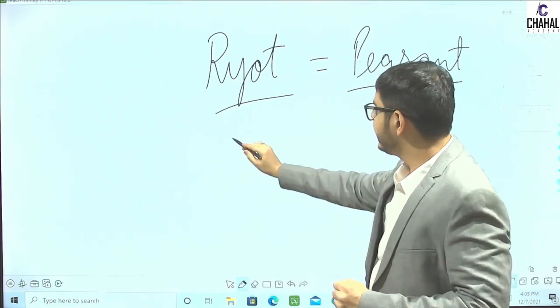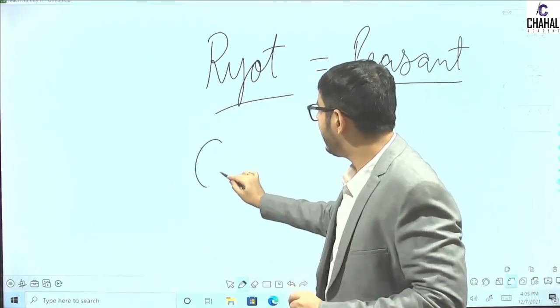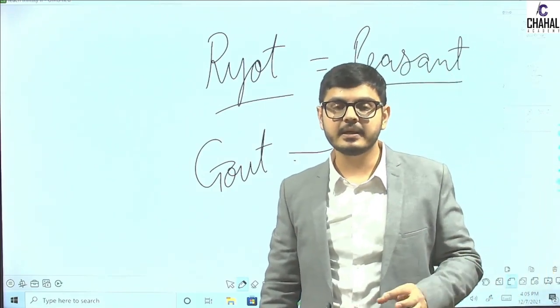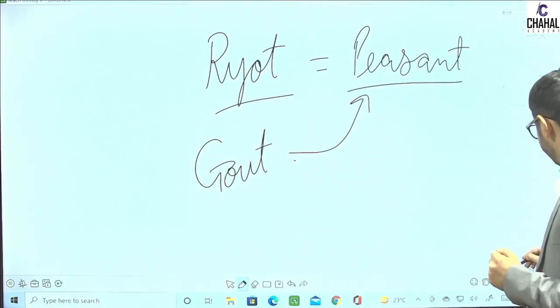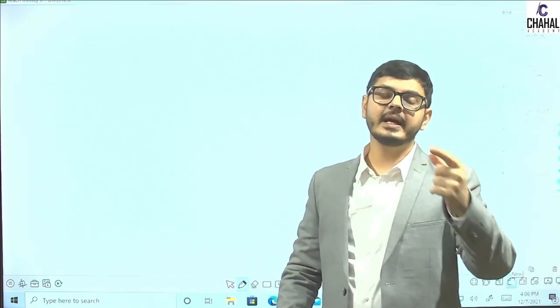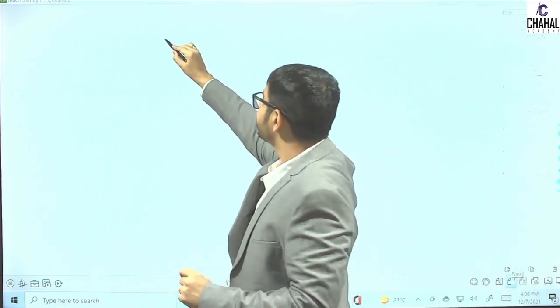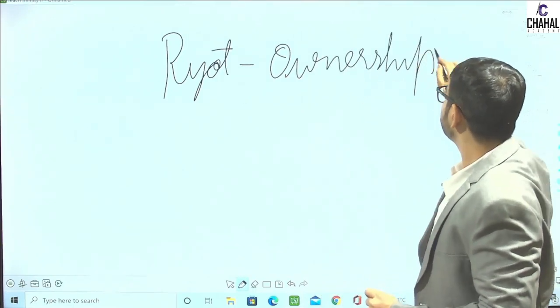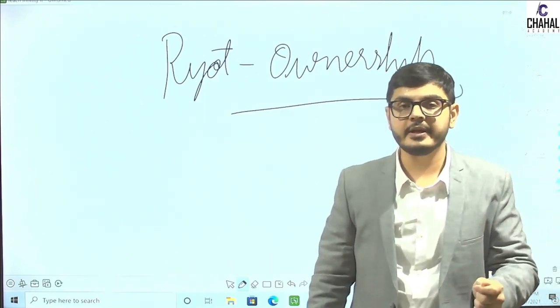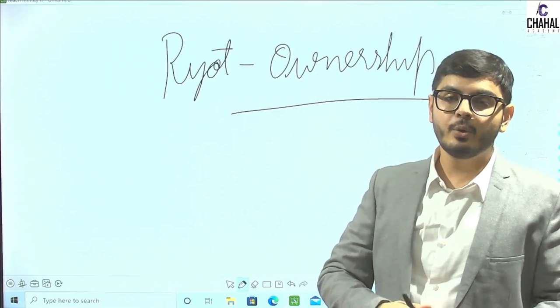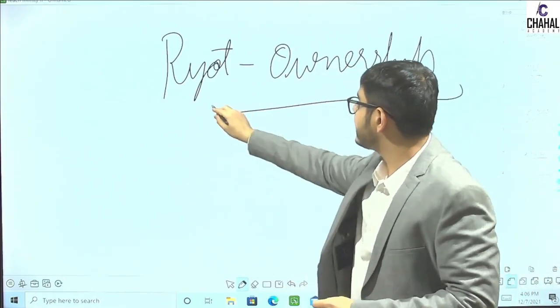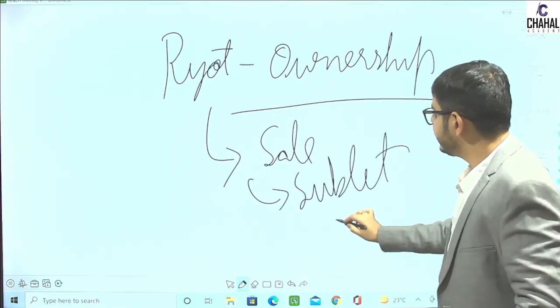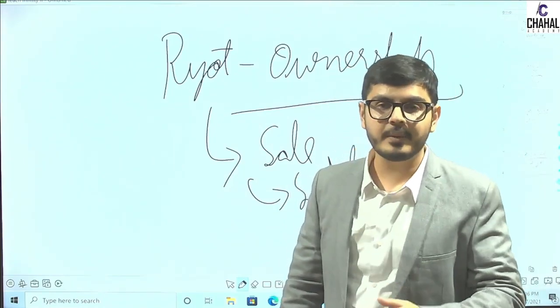What is the Ryotwari system? The Ryotwari system directly settles with the cultivators. The cultivator has all the property rights - if you want, you can sell it, you can mortgage it, and you can give it on lease. So, the property rights were given to the cultivators.